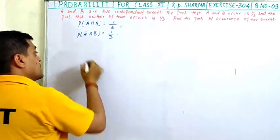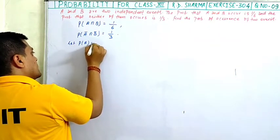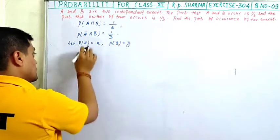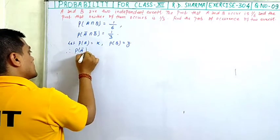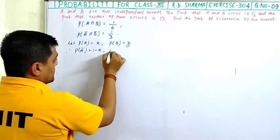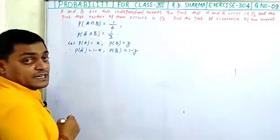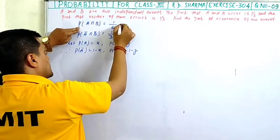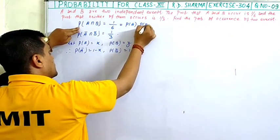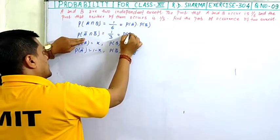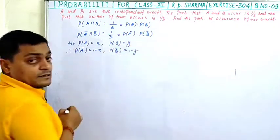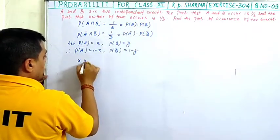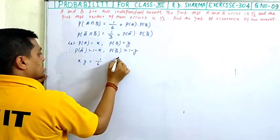To find the probability of A, let us say probability of A is x, so probability of A' is 1 minus x. And probability of B is y, so probability of B' is 1 minus y. Since A and B are two independent events, probability of A and B equals probability of A into probability of B, which equals 1 upon 6. Let this be equation number 1.